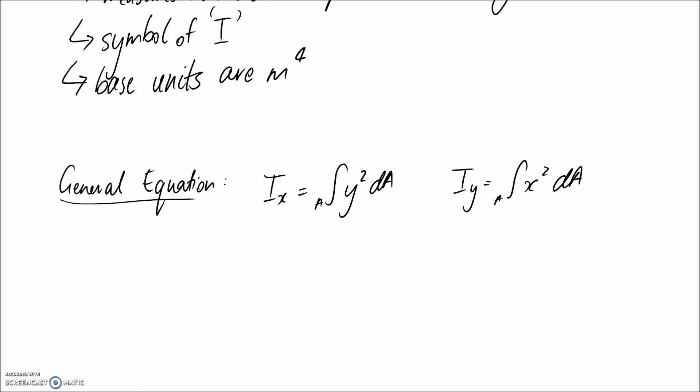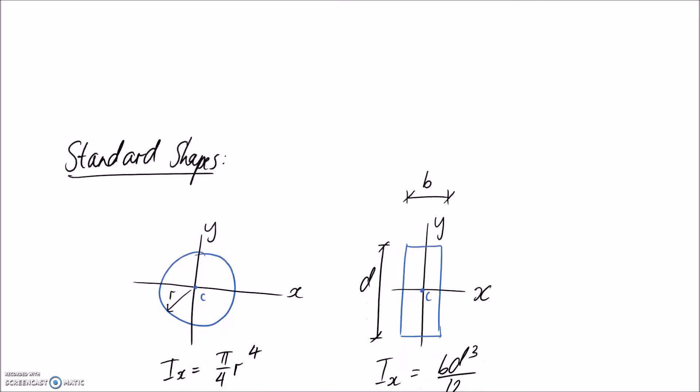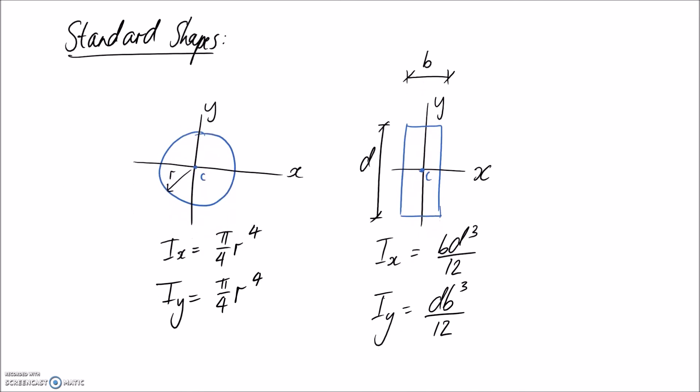So you only need to use those integration equations when you have shapes that aren't very standard. If you do have standard shapes, you can just look up what I is in tables. So I've given two examples here for some standard shapes that we're going to commonly use. So one of them is a circle. And if we draw our x and our y-axis through the centroid, we can measure I as being pi on 4 r to the 4th. And it's exactly the same for the y-axis simply because it's completely symmetric. So for a rectangle, again, a centroid sits in the middle and I've drawn my x and my y-axis through it. And we can calculate our I of our x and y-axis.